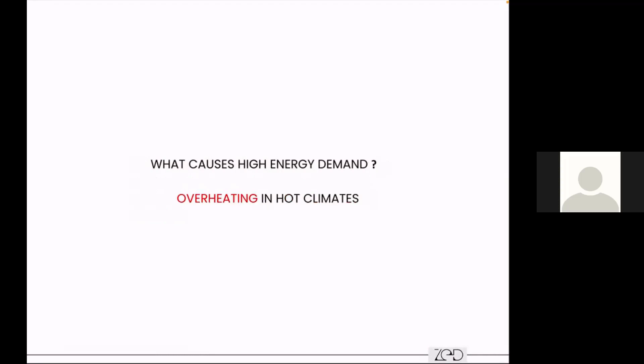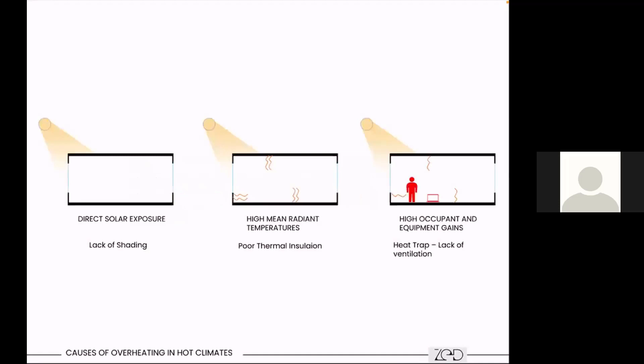What causes high energy demand and overheating in hot climates? The basic question is: do buildings actually need air conditioning during summers or heating during winter? In residential or any buildings where internal heat gains are not high, it is direct solar exposure and lack of shading, along with poor thermal insulation, which radiates a lot of heat through convective and conductive gain from outside into the building. Additionally, internal gains from high occupancy levels and equipment become a heat trap because of no ventilation and non-openable windows.